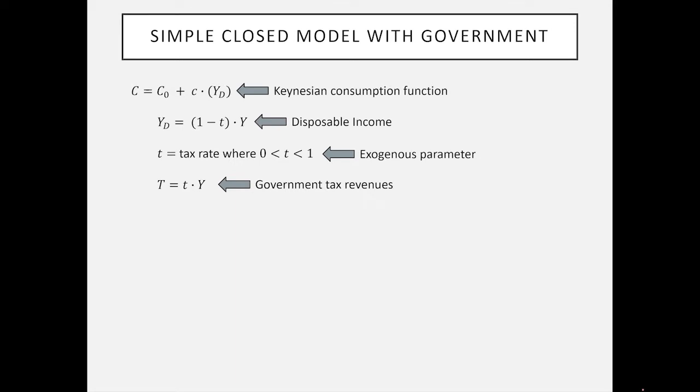Total tax revenue is going to be small t, which is this decimal point, for example let's say 10%. That means if real GDP or total income is 100 liters, then 10 liters would appear as tax revenue to the government, leaving disposable income as 90.